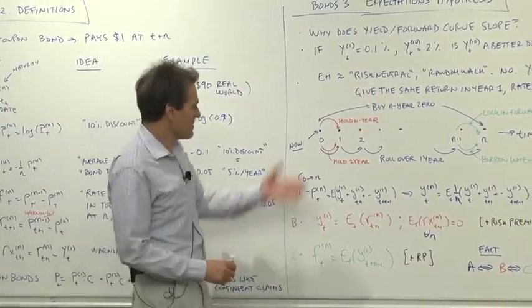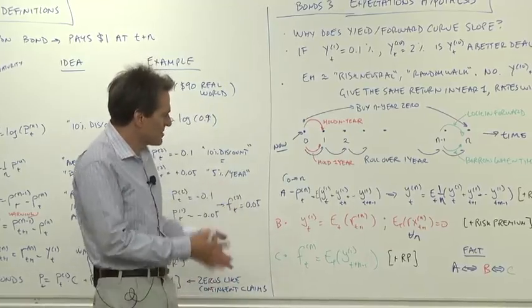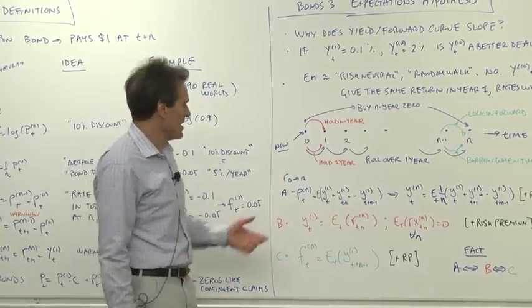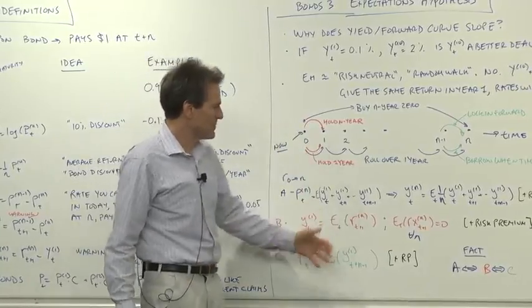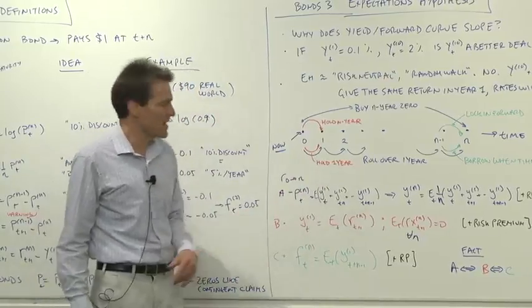And what's interesting about fixed income is it's not obvious. When we were doing one period rates of return of course there was the risk free rate and the risk premium. Here since we have things of different maturity, these statements aren't directly obvious from the idea of all things pay the same expected return.